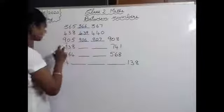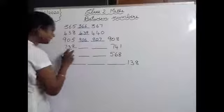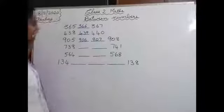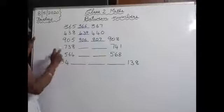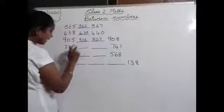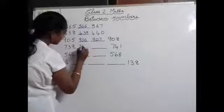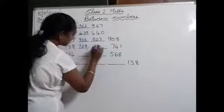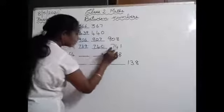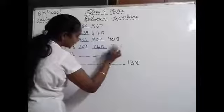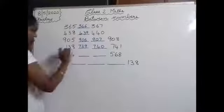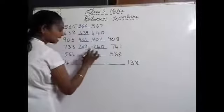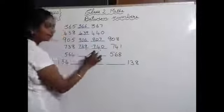Next: 738 blank blank 741. After 738, the next number will be 739, then 740, then 741. So in the blanks, which numbers will come? 739 and 740.